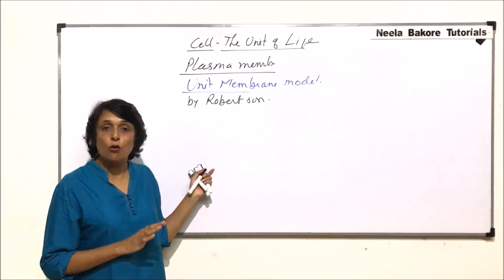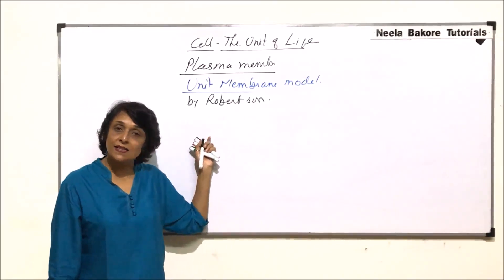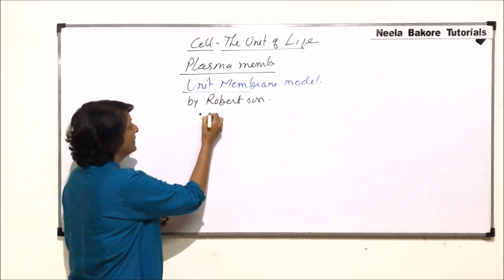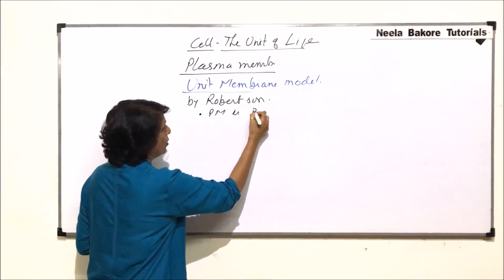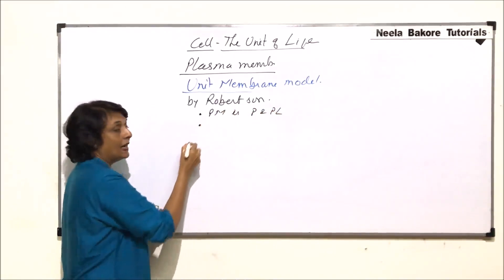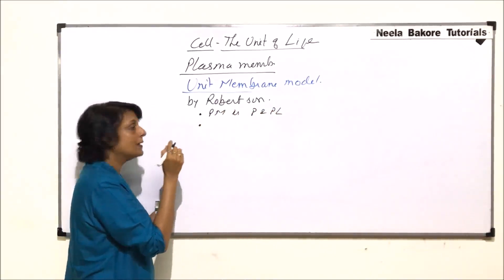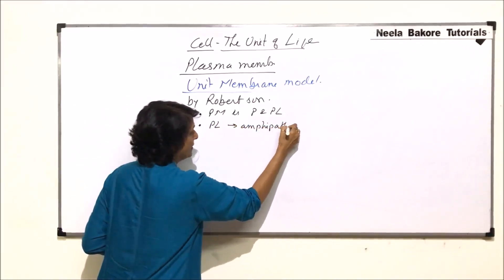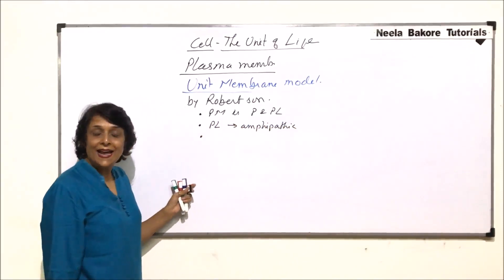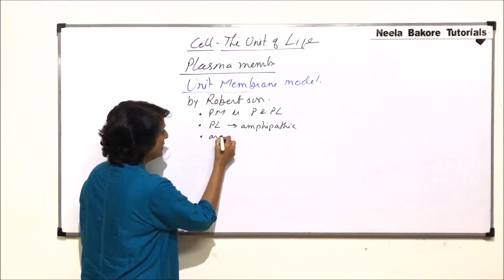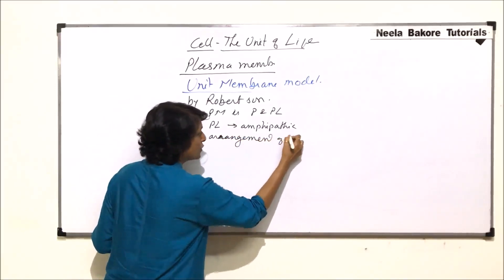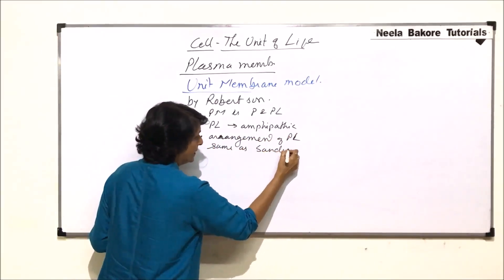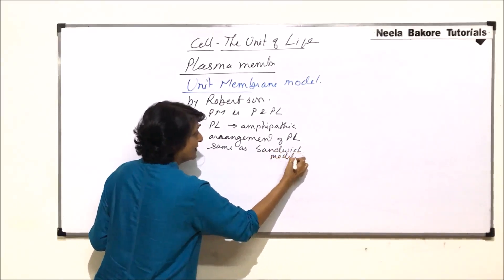We will talk about the points which are common according to Robertson's model as well as Danielli-Davson's model. Plasma membrane is a protein and phospholipid membrane. Phospholipid molecules are amphipathic, same as given by Danielli-Davson. Arrangement of phospholipid is the same as the sandwich model.